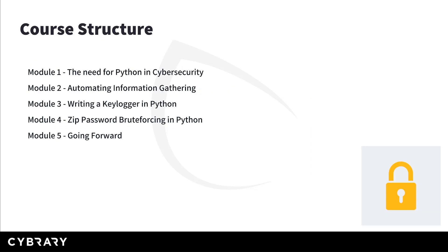From a very high level perspective, here's how the course looks. In the first module, we'll be discussing the need for Python in cyber security and why it makes one's work much more efficient and effective. The second module is all about automating information gathering. We'll be combining libraries such as nmap with system modules to put steps of information gathering on autopilot.